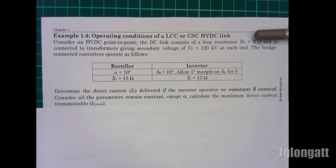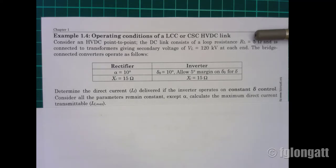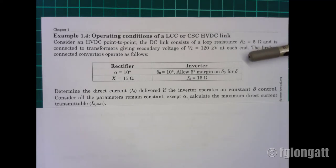We have a DC link; R_L is the resistance connecting the DC link, and the voltage coming to the AC side is 120 kV line-to-line voltage at both ends. The bridge-connected converters are operating based on the following parameters.